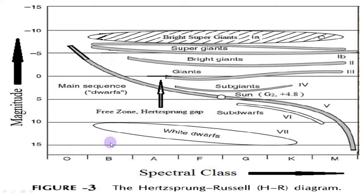The short branch extending upward to the right of the main sequence, in classes F to M, is the group of giant stars whose absolute magnitude ranges between minus 1 to plus 1. Above the giants lies the group of bright giants whose absolute magnitude ranges up to minus 3. Throughout the top of the diagram, in the absolute magnitude range minus 3 to minus 8, there is a sparse distribution of highly luminous supergiant and bright supergiant stars. Between the giants and dwarf sequence, a small group of stars of absolute magnitude plus 1 to plus 5 form the sub-giant branch of classes F to K.